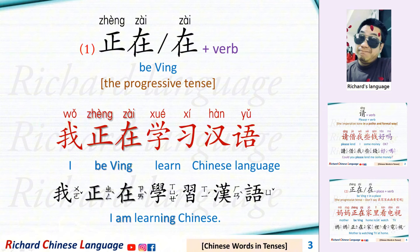正在 or 在 plus a verb. This is the progressive tense. For example: 我正在学习汉语 — I'm learning Chinese. You can also say 我在学习汉语. You can omit the word 正.